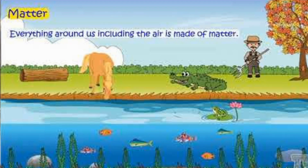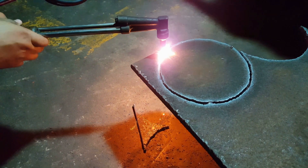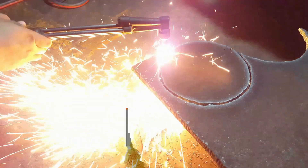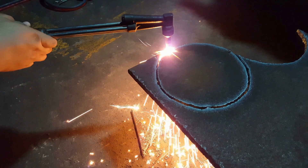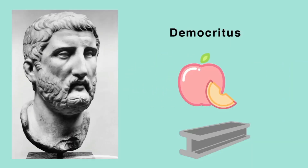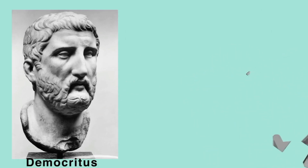Everything we see around us is made up of matter, and the atom is the basic unit of matter. Democritus, a Greek philosopher in 500 BC, gave the idea that when you divide matter into smaller and smaller pieces, a point comes where you cannot divide that particle further. He named this smallest piece of matter the 'atom'.